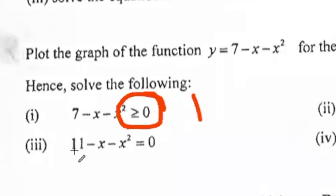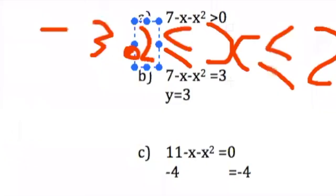The next one, if you write, you have 11 minus x minus x square equals 0. So, if you look at this, you have y equals 7 minus x minus x square. They're not looking the same. So, it means we have to do some work.